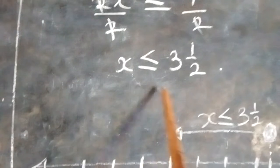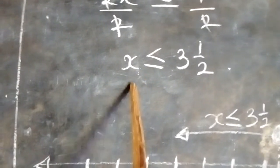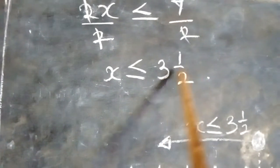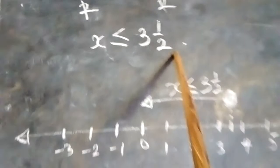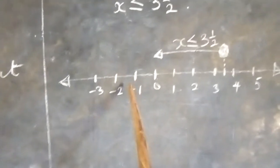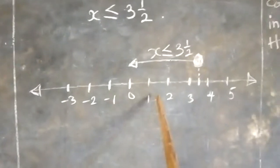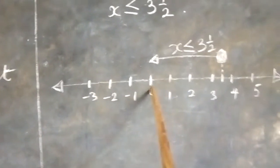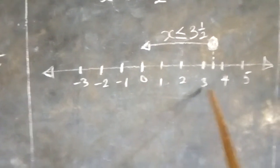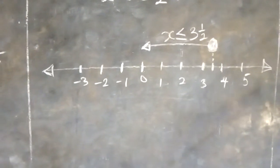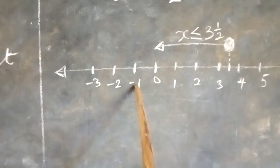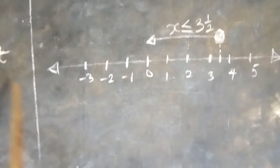The answer is x is less than or equal to 3 and a half. For the second question, we represent this on the number line. On the number line, to the positive side we have 1, 2, 3, 4 and so on; to the other side we have negative 1, 2, 3 and so on.